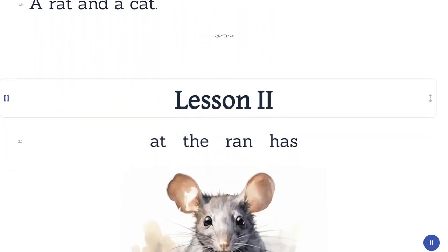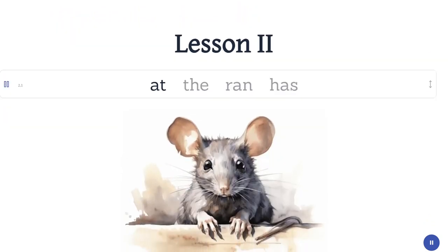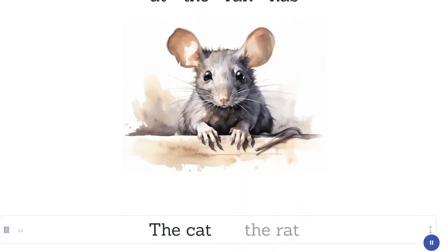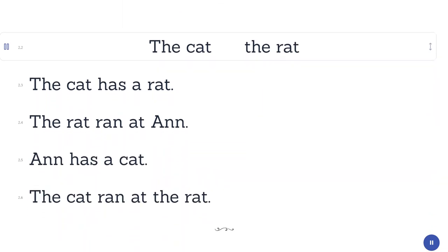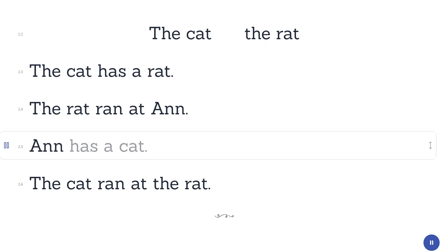Lesson Two. At. The. Ran. Has. The cat. The rat. The cat has a rat. The rat ran at an. Ann has a cat. The cat ran at the rat.